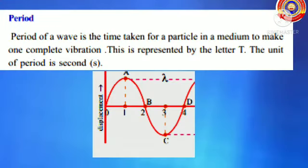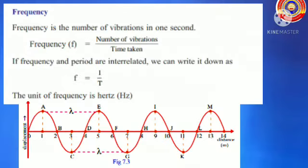Next: period. The period of a wave is the time taken for a particle in a medium to make one complete vibration. This is represented by the capital letter T, and the unit of period is second. Next: frequency. Frequency is the number of vibrations in one second — that is, frequency equals number of vibrations divided by time taken. Since frequency and period are interrelated, we can write F equals 1 divided by T. The unit of frequency is Hertz, represented by Hz.